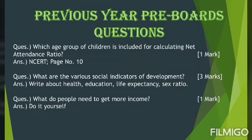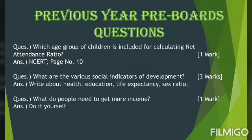Next question: what are the various social indicators of development? This is a 3 marks question. You can write about education, health, and sex ratio. Whatever indicator you mention — for example, infant mortality rate — put a dash, define that term, and then mention how that particular indicator is related to development. Whether infant mortality rate being high or low leads to development. Always define the indicator first and then relate it to development.